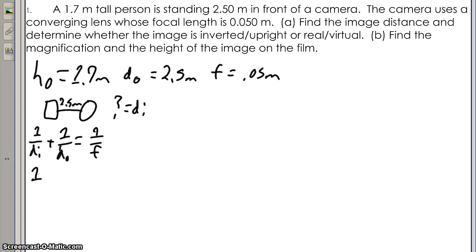1 over 0.05, subtract it from 1 over 2.5, which is also in the problem, and is equal to 1 over the distance of the image, which is 19.6.